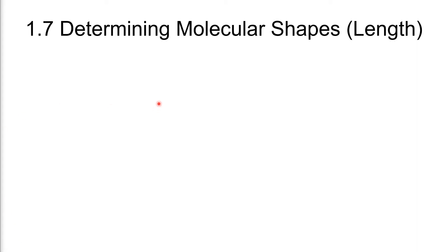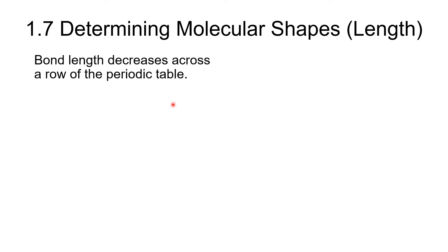We're on to section 1.7, and this section is all about determining the molecular shape. There are two components we want to look at: the length of bonds, and the angles between bonds. We'll start by looking at bond length.